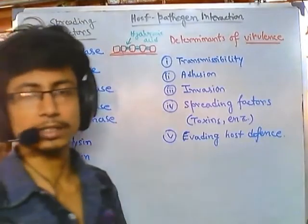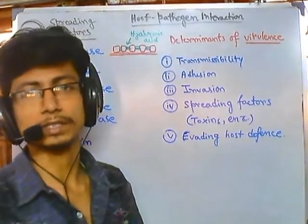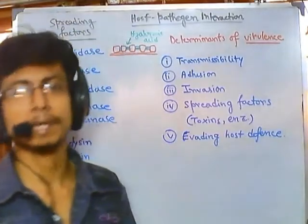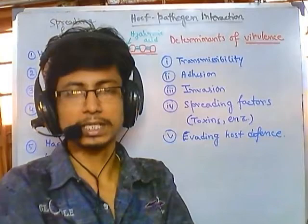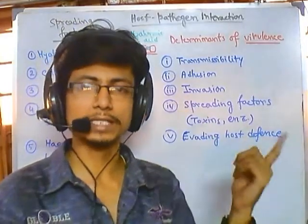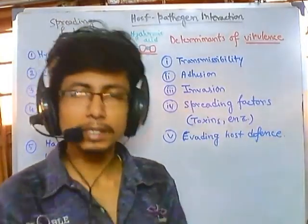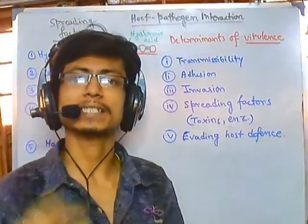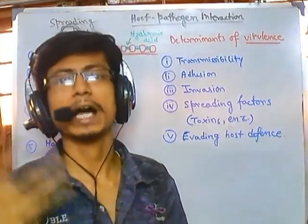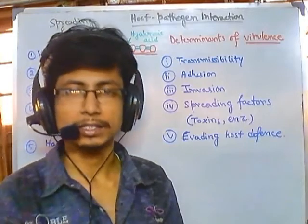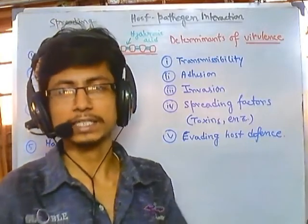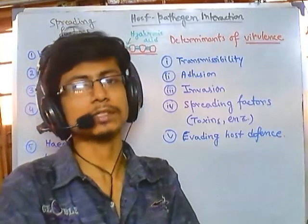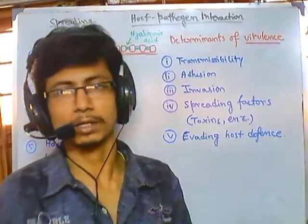Collagenase is produced especially by Clostridium perfringens, an anaerobic bacteria that loves to reside in muscles. They feed on collagen using collagenase, break down the protein parts, disintegrate those proteins, and start to form gases - carbon dioxide, hydrogen sulfide (H2S) - causing the muscle to swell up. This is called gas gangrene, a very severe form of disease caused by Clostridium perfringens.